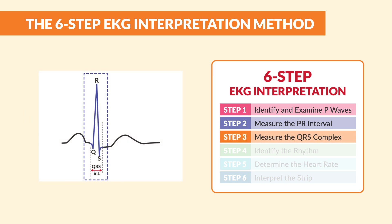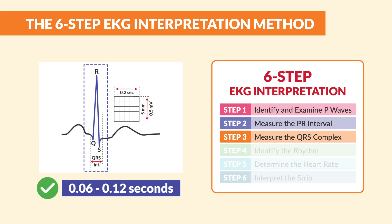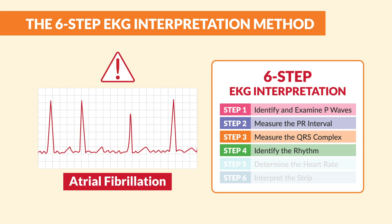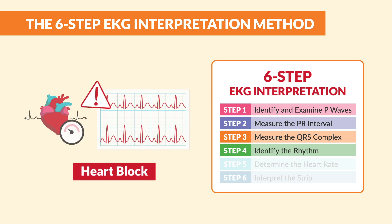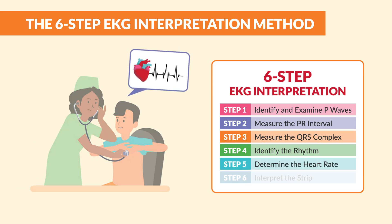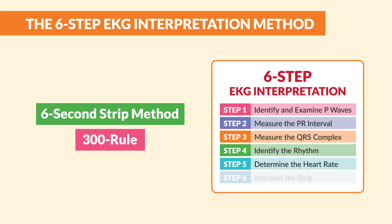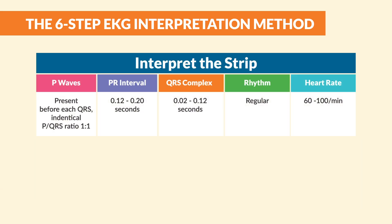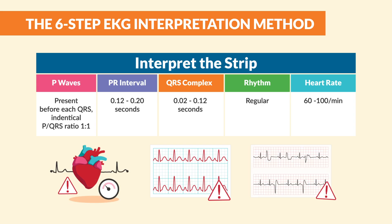Step three: measure the QRS complexes. Normally it should be between 0.06 to 0.12 seconds — too wide, and this screams trouble. Step four: identify the rhythm. Is it regular or irregular? Line up those R peaks with one index card or calipers. Is it irregularly irregular? Think atrial fibrillation. Or regularly irregular? Think heart block. Step five: determine the heart rate — use a six-second strip or the 300 rule for quick results. Step six: interpret the strip, putting it all together to diagnose conditions like bradycardia, heart blocks, or even PVCs.